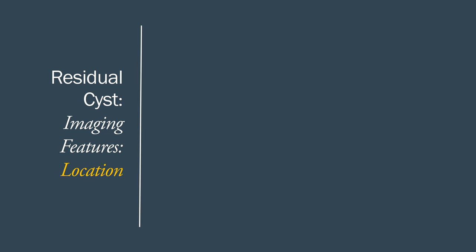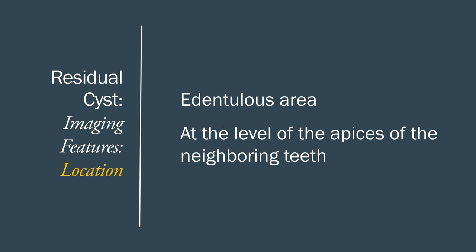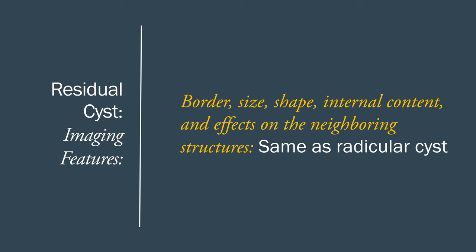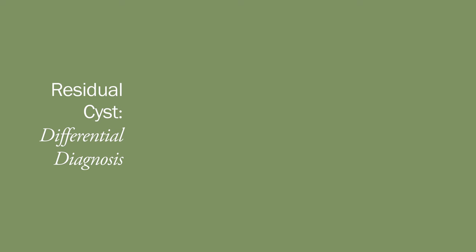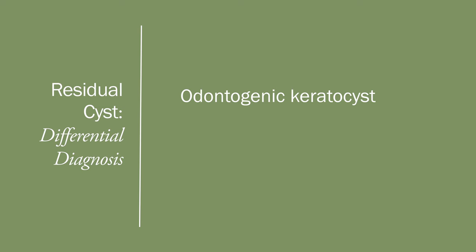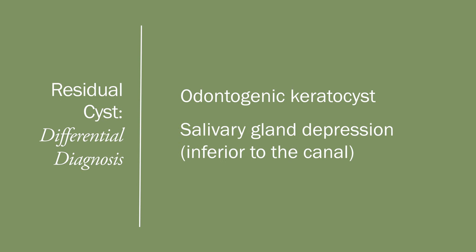Similar to a radicular cyst, if a residual cyst is infected the patient may have pain. The location of a residual radicular cyst is in an area of a missing tooth. Because most residual cysts originate from a radicular cyst, you will see such a cyst at the level of the apex of neighboring teeth. The radiographic features — border, size, shape, internal content, and effects on neighboring structures — are the same as radicular cysts.